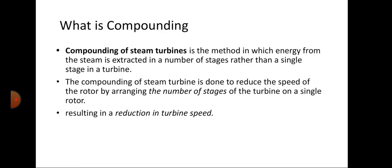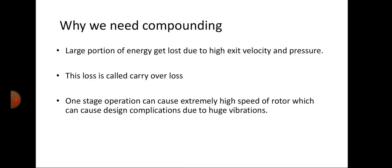So why is compounding done in a turbine? Compounding is generally done to reduce the turbine speed. By increasing the number of sets of stages in the turbine, we can reduce the turbine speed.